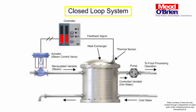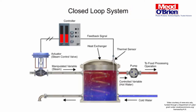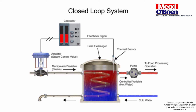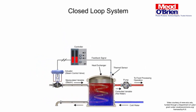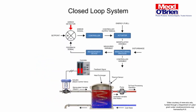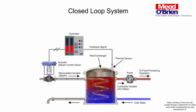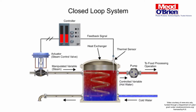The function of a closed loop system is to monitor and automatically maintain a variable at a desired set point in a manufacturing process. Using an example of a heat exchanger, the operation of a closed loop system is compared with a block diagram. The heat exchanger supplies heated water to a food processing operation.